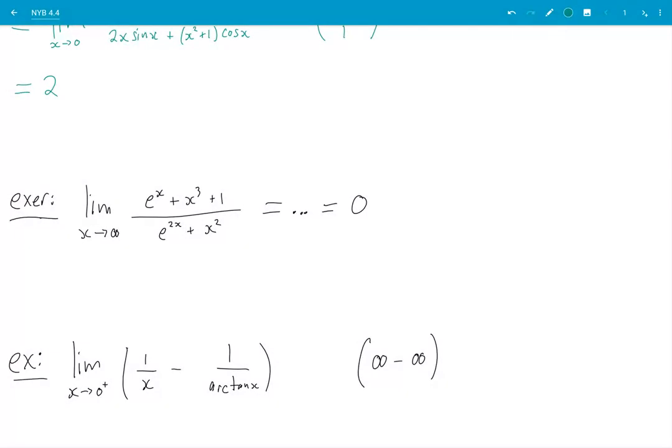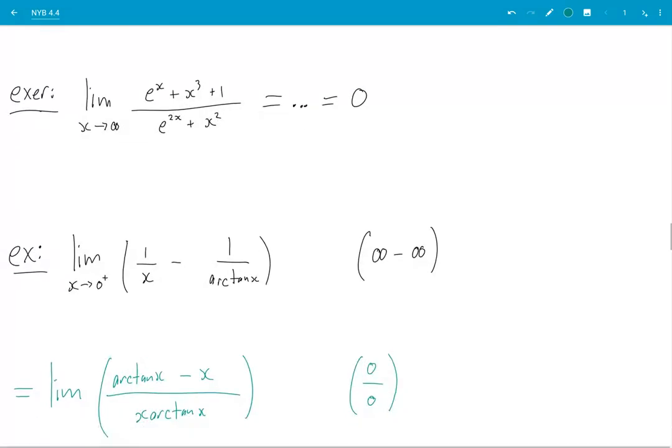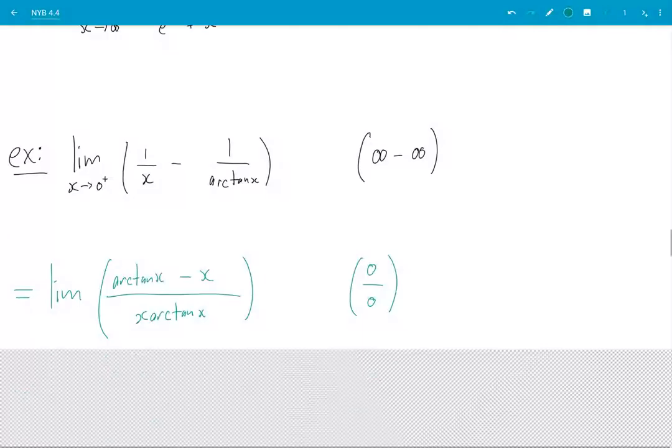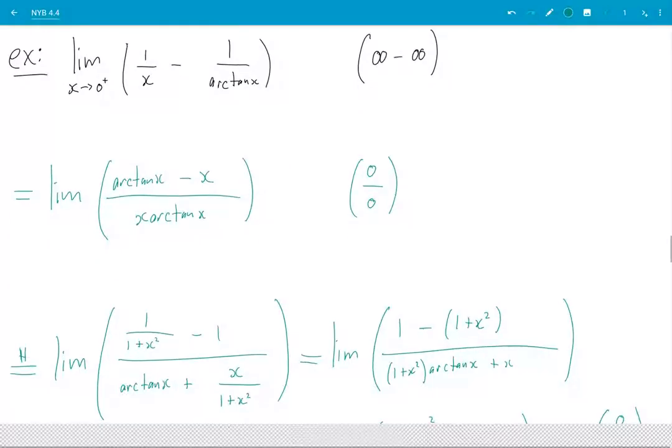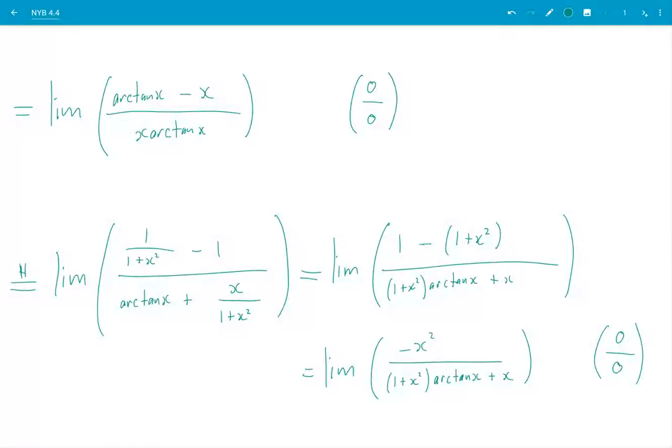Okay, so what I need to do is try to use L'Hôpital's rule. So I need a fraction. Okay, so I'm going to do a common denominator to make a fraction. And what do you know? The resulting limit is of the form zero over zero. Oh boy, let me just put all this on the screen. You can pause and copy.